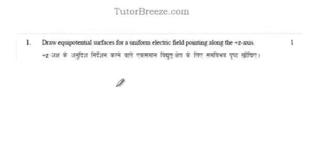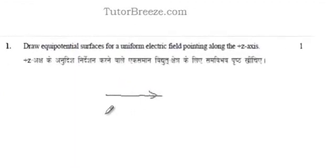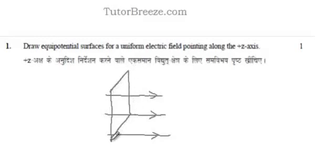We are given a uniform electric field along the positive z-axis. In that case, the equipotential surfaces will be perpendicular to this electric field. You will have surfaces like this, planes, which are in the x-y direction.